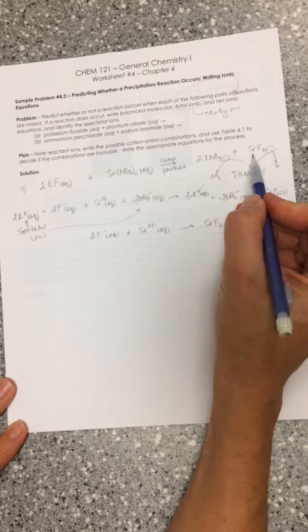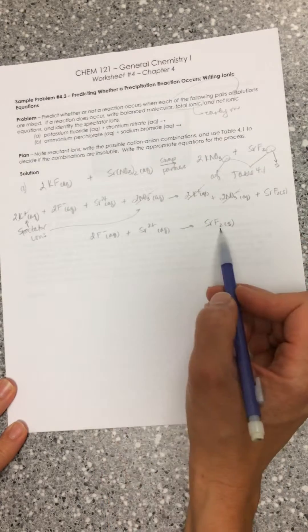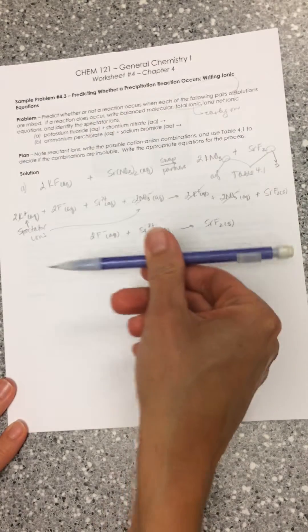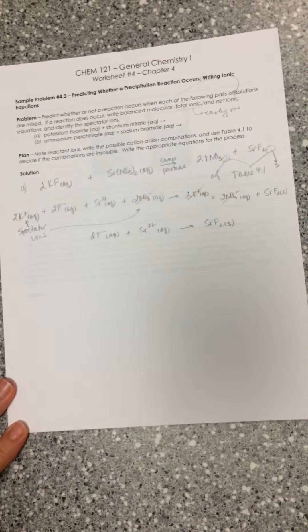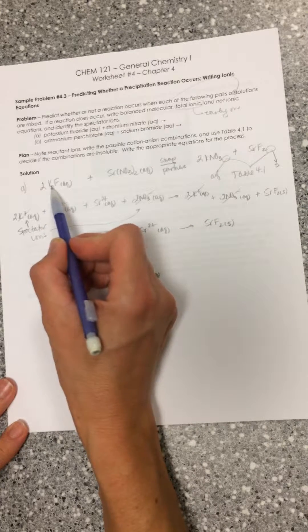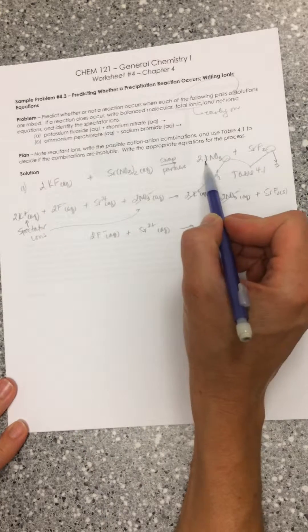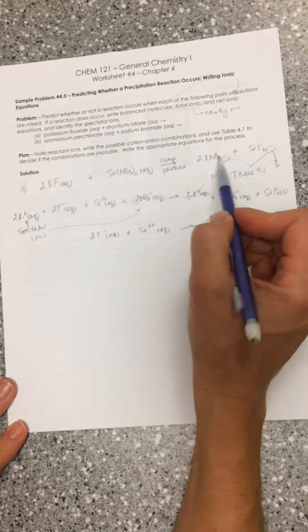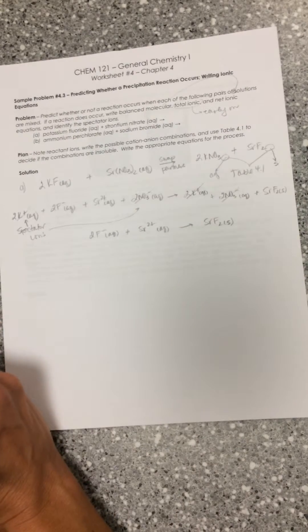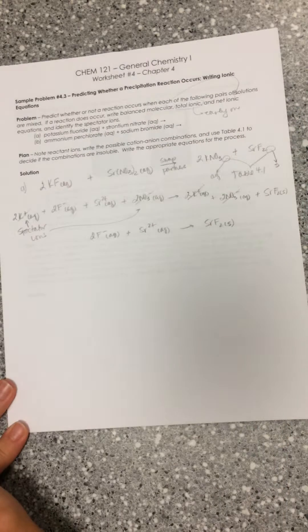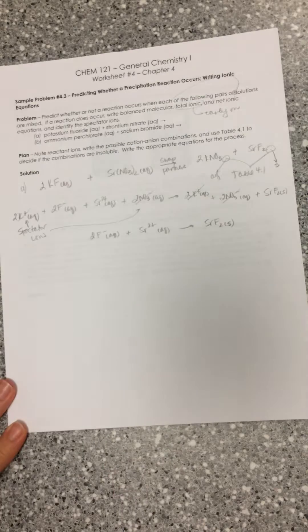We have balanced molecular, total ionic, and net ionic. What we'd like to do is write our balanced molecular and from there come directly to net ionic. With practice, you can see: here's potassium as part of an aqueous on both sides - that's a spectator ion. Nitrate is part of an aqueous on both sides - that's a spectator. Fluoride is part of aqueous but also part of solid, so it appears in our net ionic. Strontium is part of aqueous and part of solid, so it appears in our net ionic.